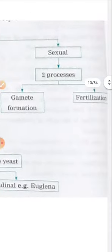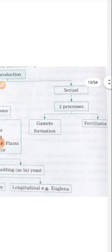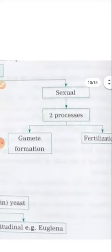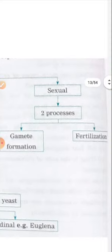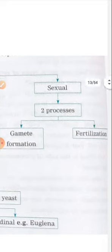Sexual reproduction takes place in higher animals and plants by the formation of two gametes, that is male and female. It has two steps: first is formation of the gametes, and second is fertilization. We will see that in the next video.